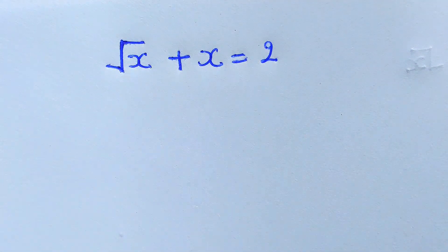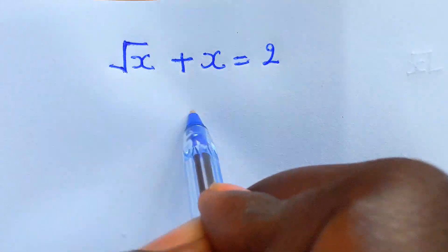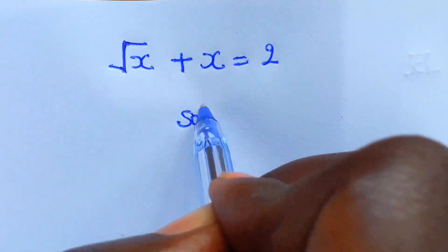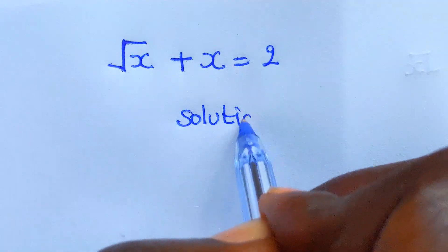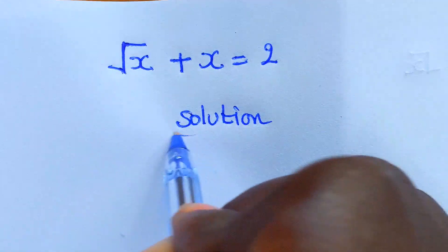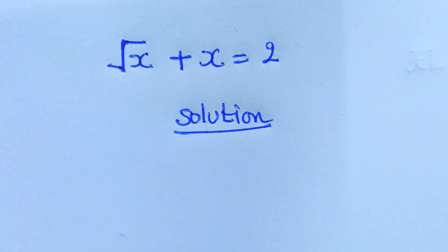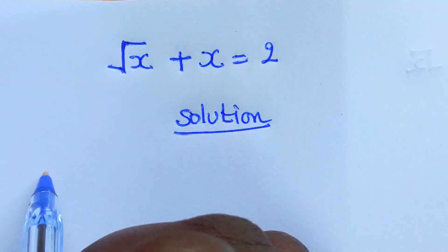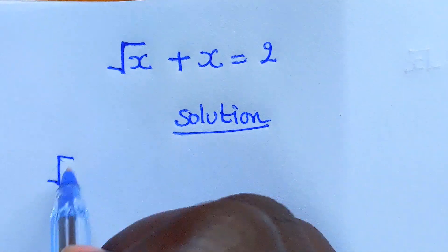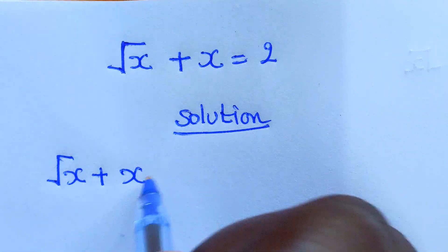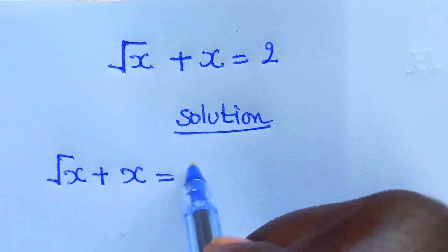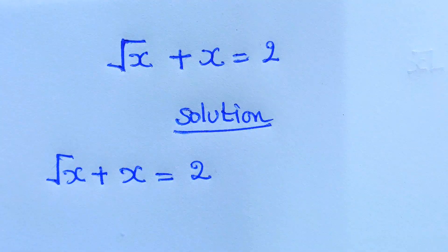Hello everybody, welcome to this platform. Let's provide a solution very quickly. We have square root of x plus x equals to 2.